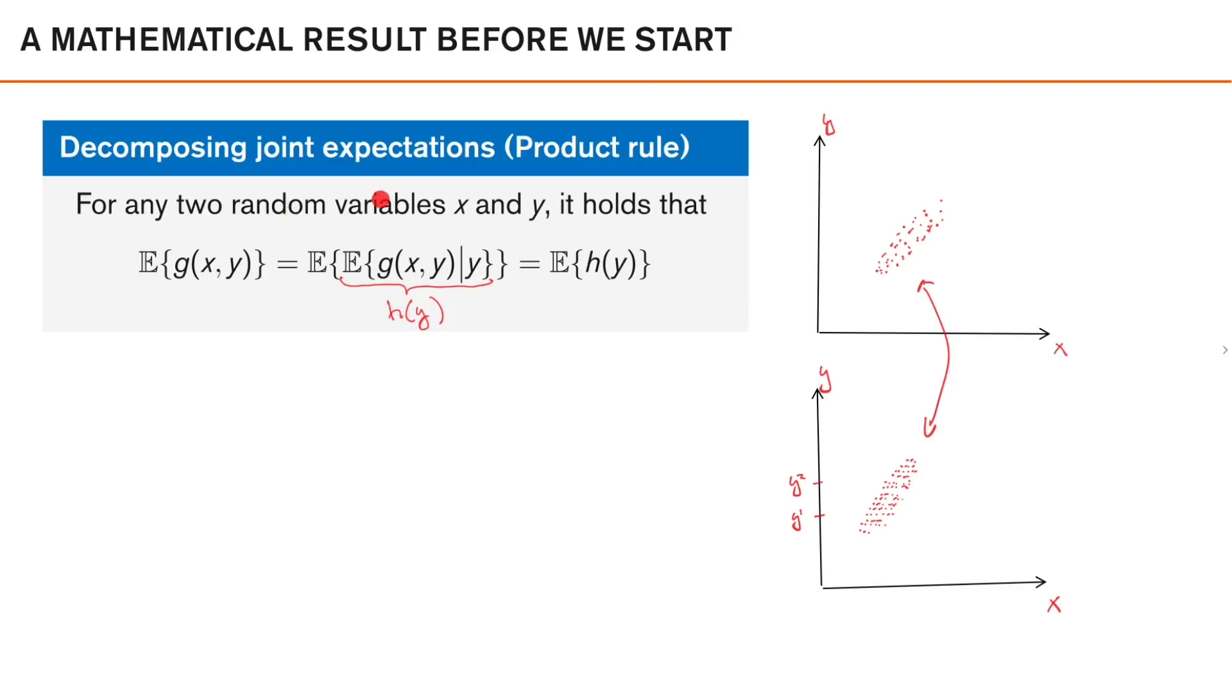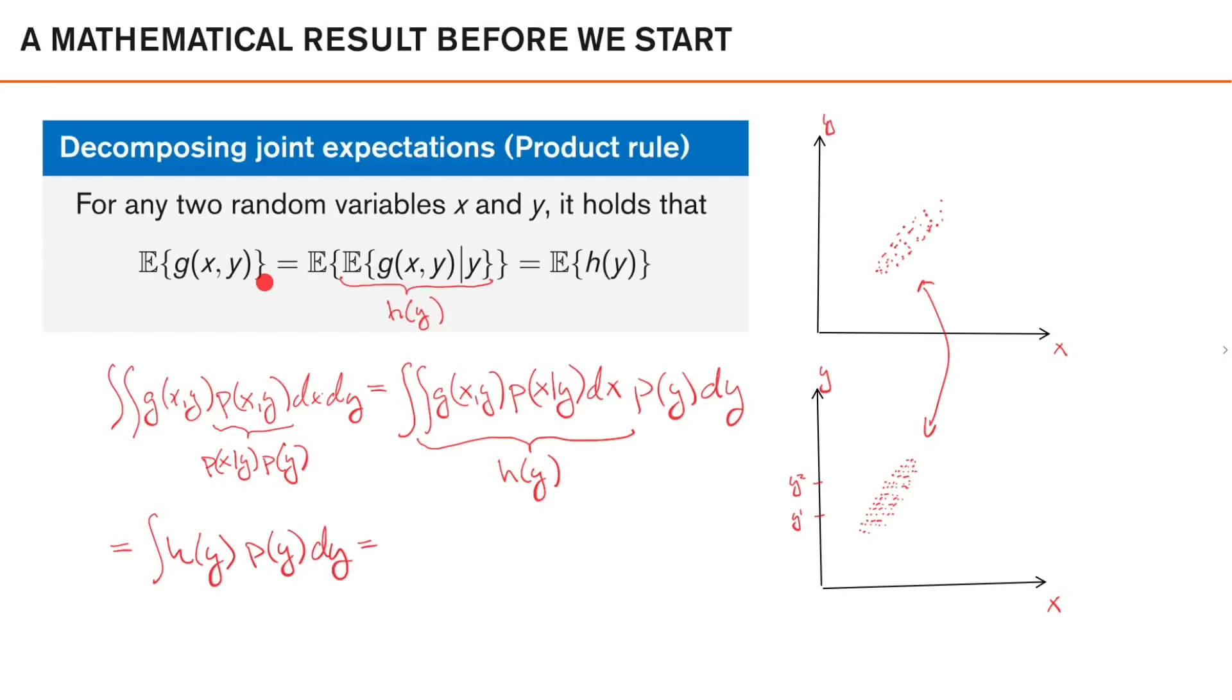We can also view this strictly mathematically, where this expected value here is the integral, where we can decompose this using the product rule. We decompose this into p of x given y times p of y. And if we separate out factors depending on x and on y, we can rewrite the integral as this. Where this here clearly is h of y, so this integral here is simply, which is the expected value of h of y.